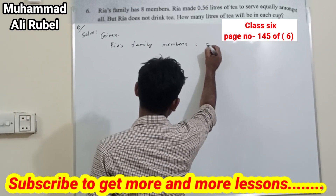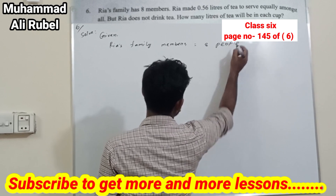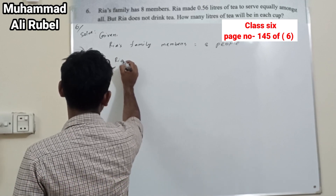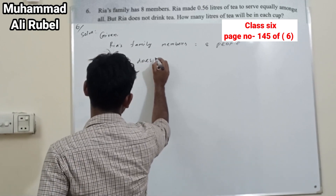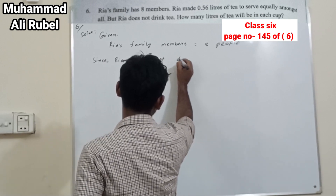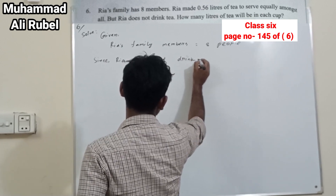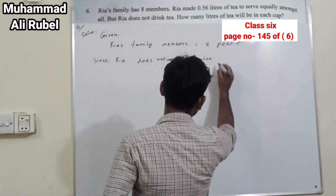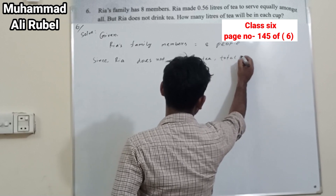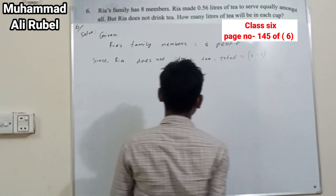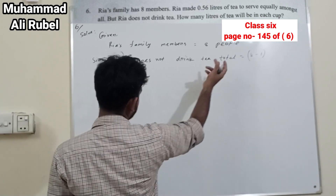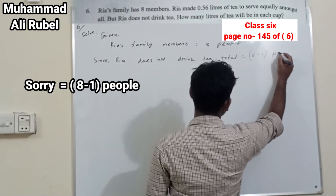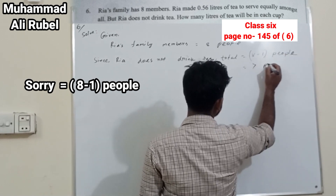Ria's family members equal 8 people. Since Ria does not drink tea, we do 8 minus 1 — Ria is one member. That's why we have to subtract from 8 minus 1 people, giving us 7 people.